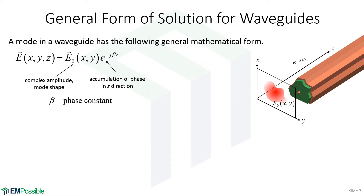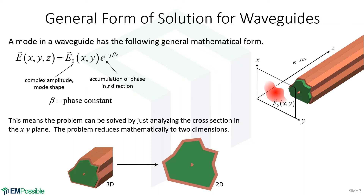In a way, a mode propagating along the waveguide is a boring thing — that picture stays the same, it just accumulates phase. However, since nothing too interesting is happening in the Z direction, this lets us do something really neat. Even though this is a three-dimensional problem, it mathematically reduces to a two-dimensional problem. Our three-dimensional waveguide really only needs to be analyzed in its cross section — a two-dimensional analysis. So without any approximations, almost any waveguide can be analyzed just in its cross section.